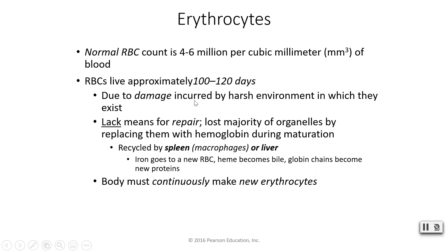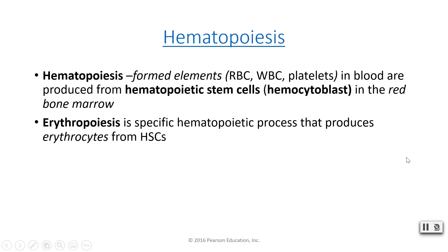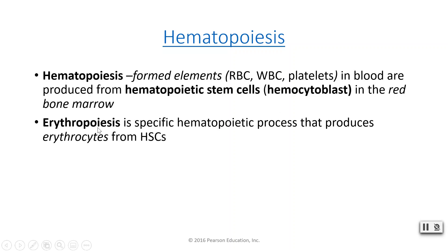Since your red blood cells don't live very long, we are continuously making new erythrocytes in your bone marrow — a process called hematopoiesis. If we are specifically talking about red blood cells, we call it erythropoiesis. Hematopoiesis is the formation of all your formed elements: your red cells, white cells, and platelets. They all come from the same origin point — hematopoietic stem cells called hemocytoblasts, which live in your red bone marrow.